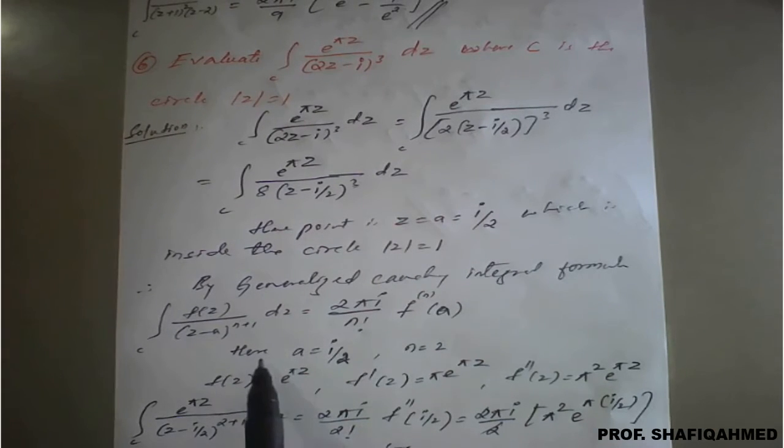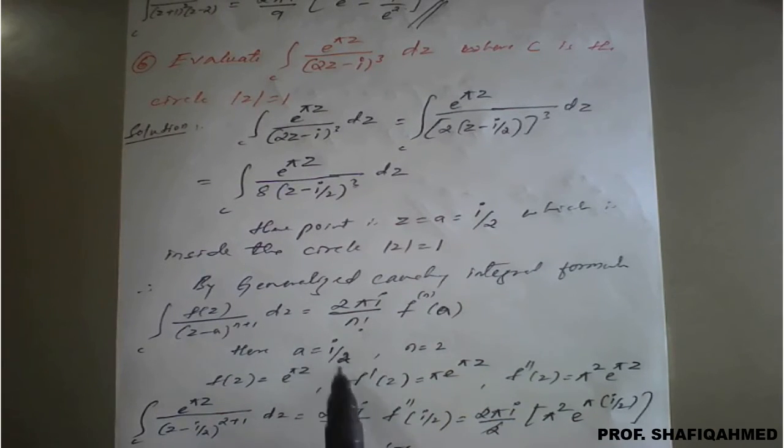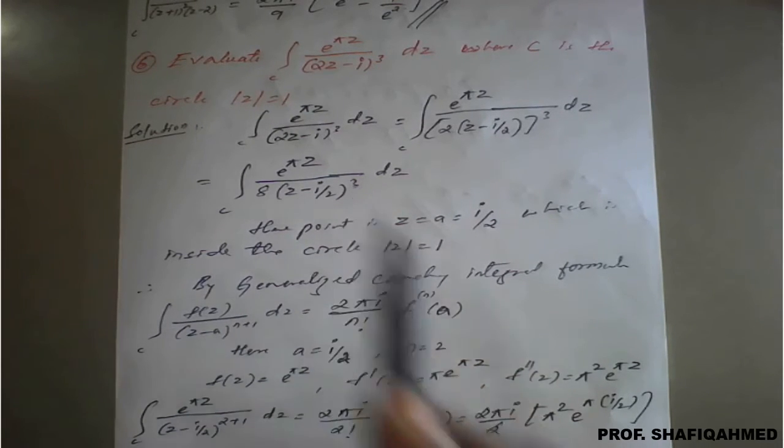Before simplifying, see that the value of a is i upon 2 and n value is 2, because it is raised to 3 means 3 can be written as n plus 1, which is 2 plus 1.